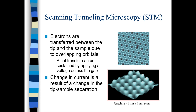Now we will see about the scanning tunneling microscope. Electrons are transferred between the tip and the sample due to the overlapping of orbitals. A net transfer can be sustained by applying a voltage across the gap, which is possible due to the effect of quantum tunneling.